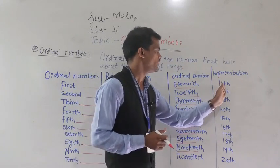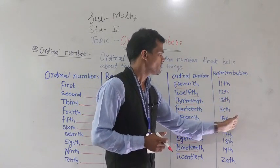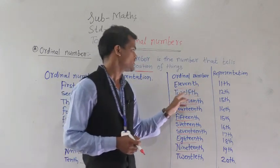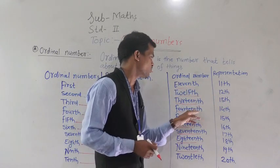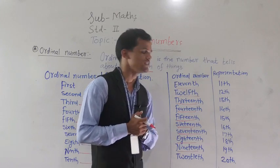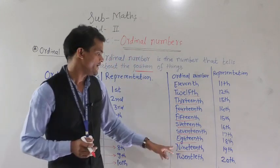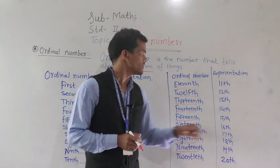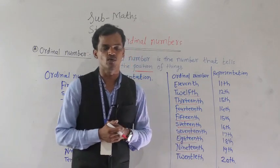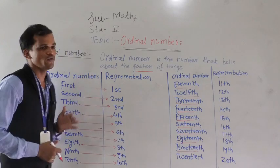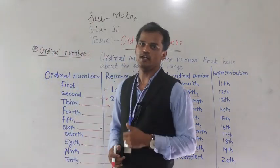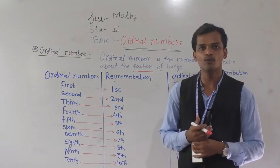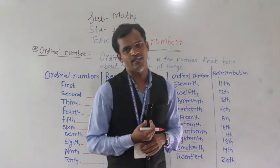These are very simple — just write 'th' after the number. So eleventh, twelfth, thirteenth, fourteenth, fifteenth, sixteenth, seventeenth, eighteenth, nineteenth, and twentieth spellings and their representations are formed. Today we have seen ordinal numbers. Ordinal numbers means the numbers that tell about the position of things.